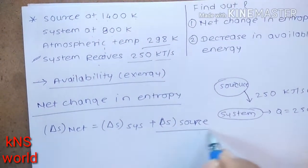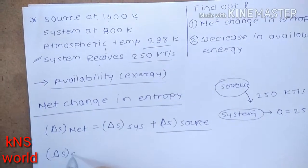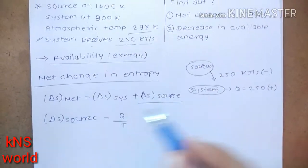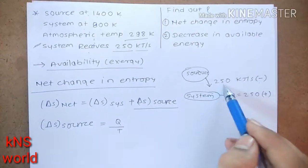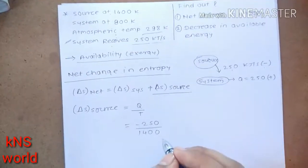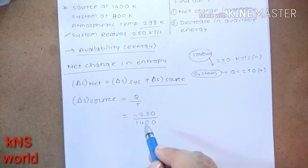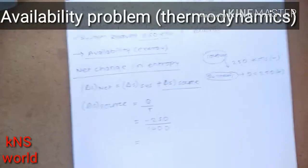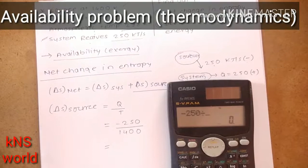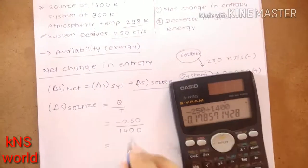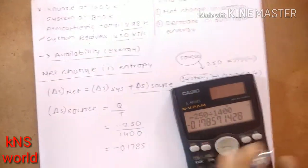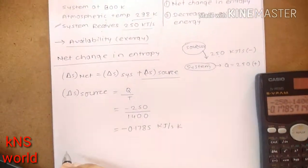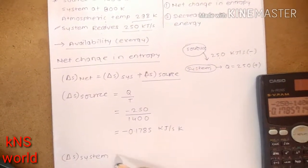First, find delta S of the source using Q/T. Since the source is giving 250 kJ/s, we take Q as negative: minus 250 divided by 1400 Kelvin. The answer is minus 0.1785 kilojoules per second per Kelvin.